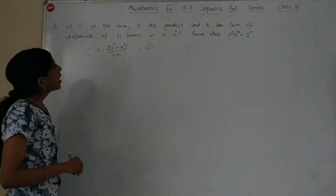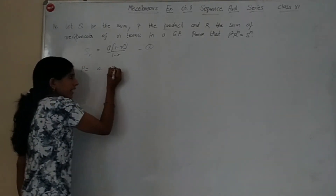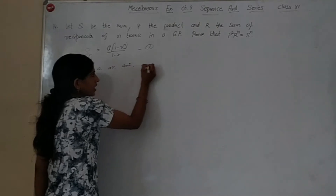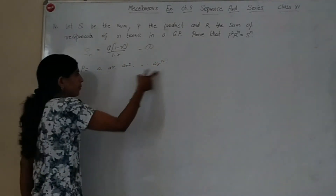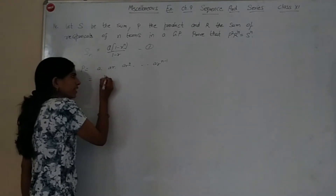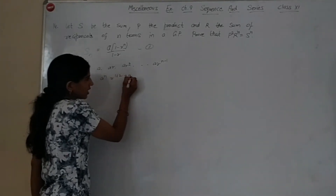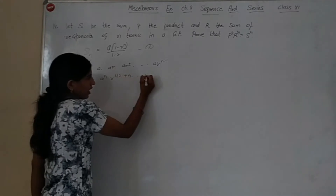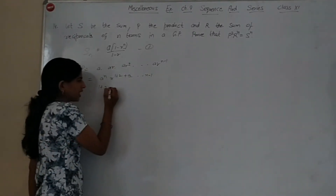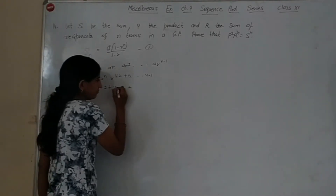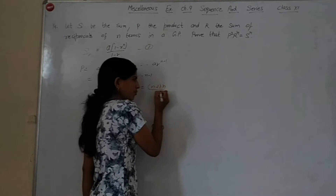P is the product of n terms: P = a · ar · ar² · ... · ar^(n-1). The exponent of r goes from 0, 1, 2, ... up to n-1. Applying the sum of natural numbers formula, the total power of r is n(n-1)/2.